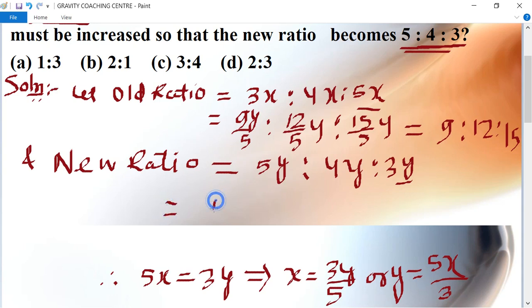Equal to 25 upon 3x, ratio 20x upon 3, ratio 15x upon 3, which means 25 ratio 20 ratio 15.